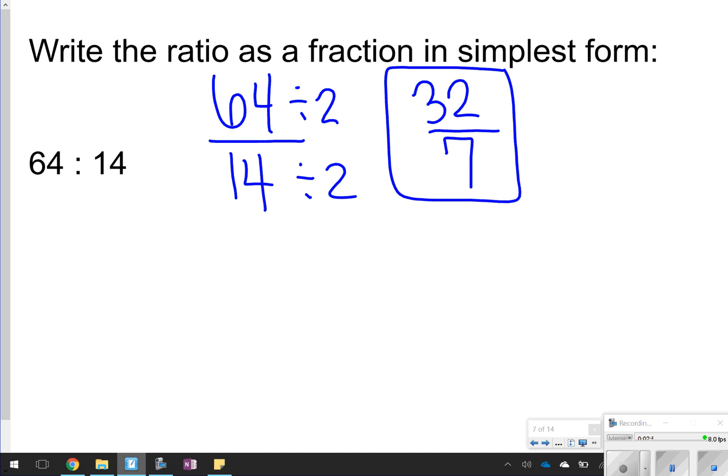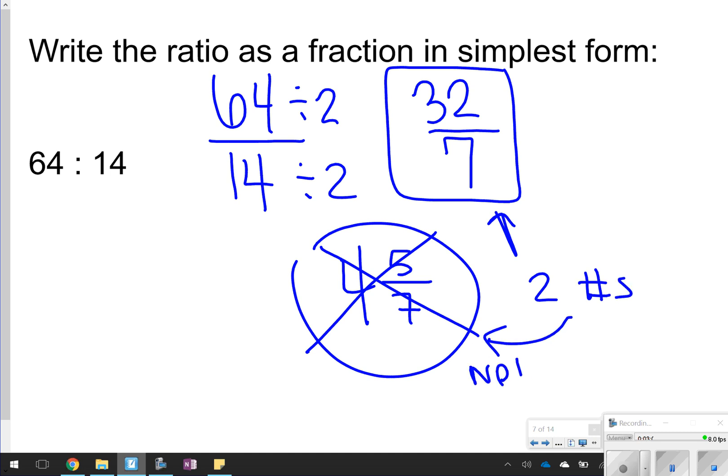I'm not going to change this to a mixed number. A lot of you are thinking, Ms. Mullen, why can I put it as 4 and 5 sevenths? This is not a ratio. Remember, a ratio needs to compare two numbers, and this is not two numbers. That's a whole family of numbers. So you don't want to change them to mixed numbers. You always want to keep a ratio as an improper fraction. I know it's kind of hard to wrap your head around, but just so you know, ratios have to have two numbers, one number on the top and one number on the bottom.